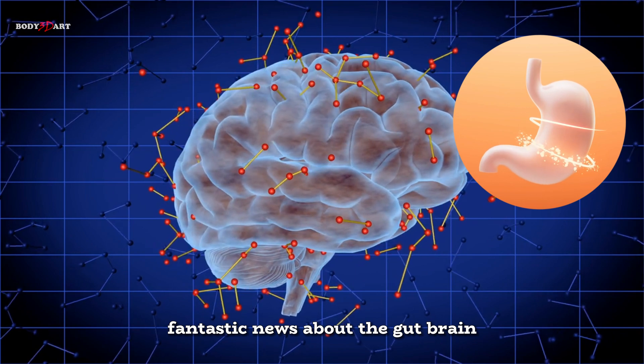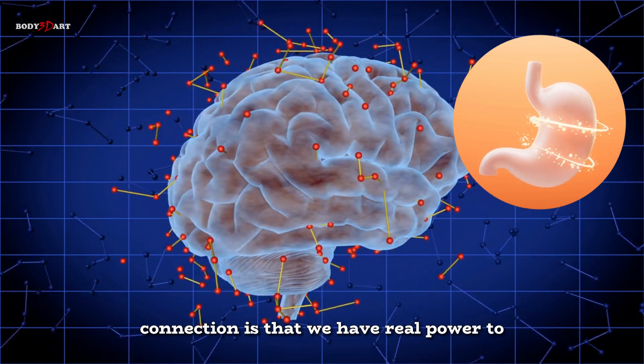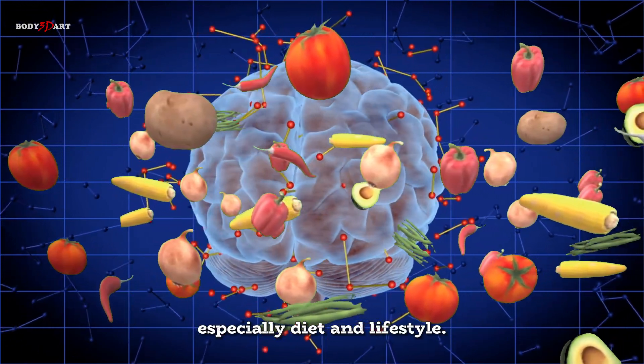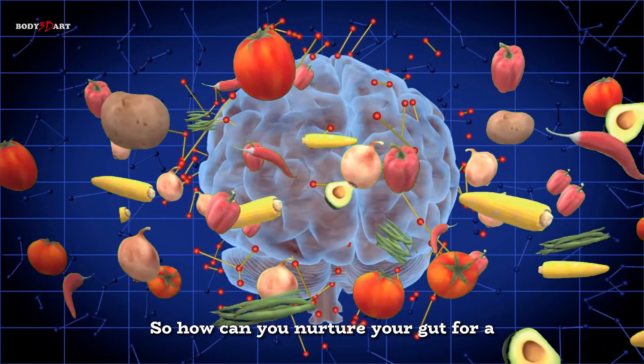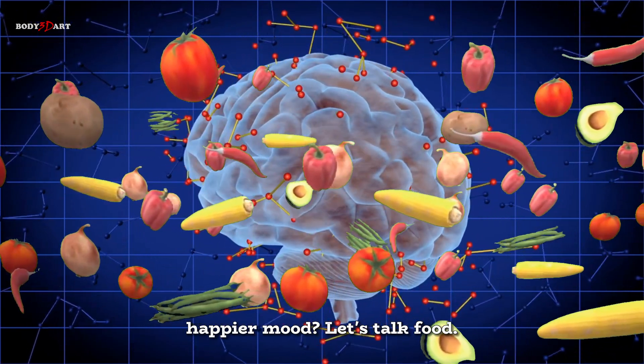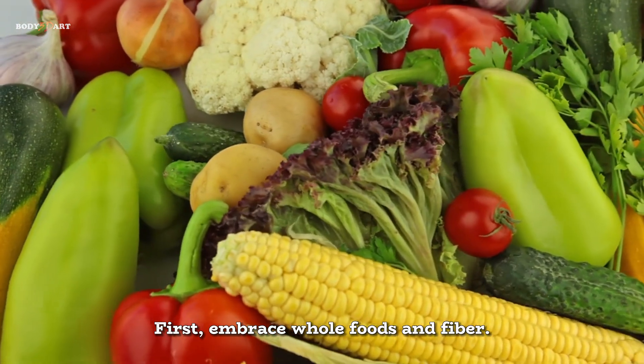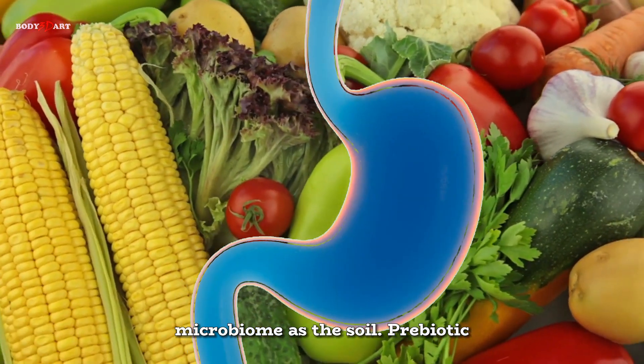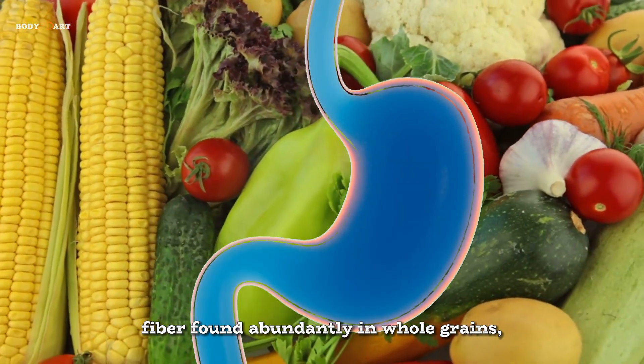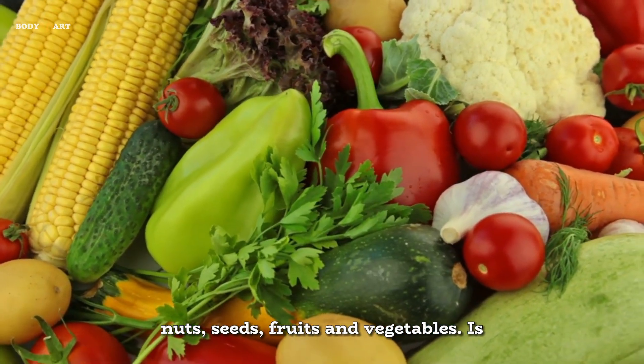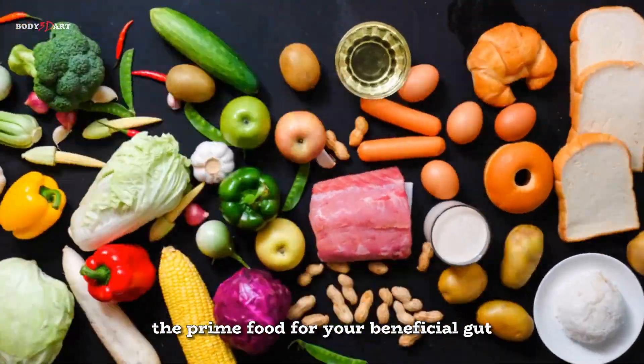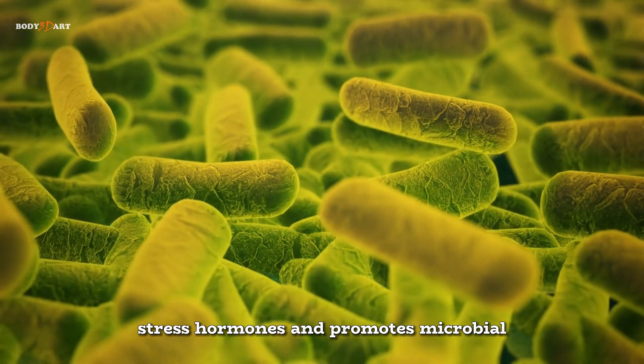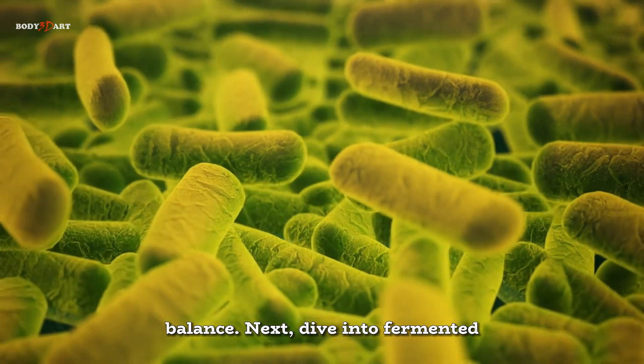The fantastic news about the gut-brain connection is that we have real power to influence it through our daily choices, especially diet and lifestyle. So how can you nurture your gut for a happier mood? Let's talk food. First, embrace whole foods and fiber. Think of your body as a farm and your microbiome as the soil. Prebiotic fiber, found abundantly in whole grains, nuts, seeds, fruits and vegetables, is the prime food for your beneficial gut bacteria. Feeding them well helps reduce stress hormones and promotes microbial balance.